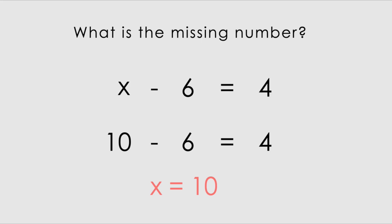If you actually work backwards, you do 6 plus 4, you actually get 10, which is why x is actually equals to 10. Now we check our answer and we see 10 minus 6 equals 4. So x is equals to 10.